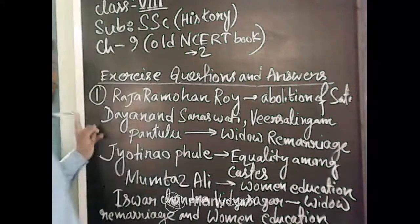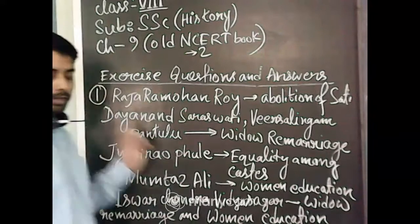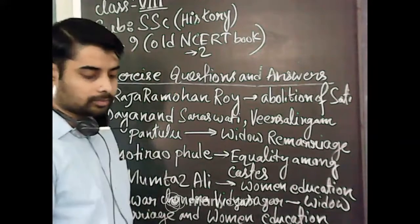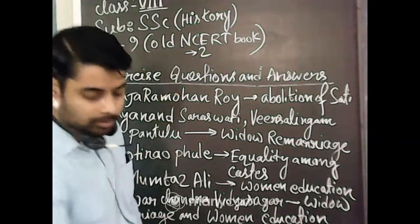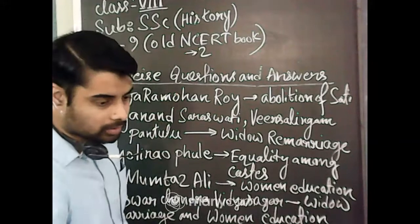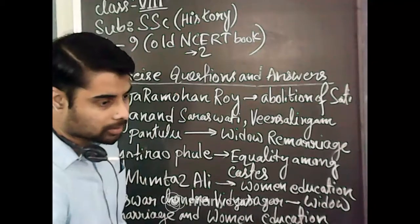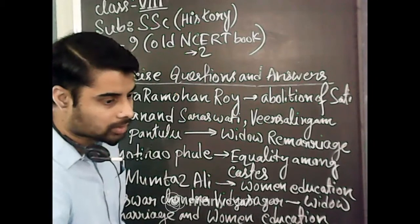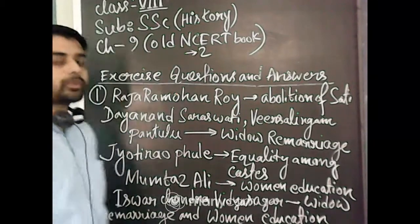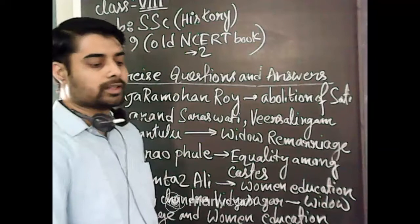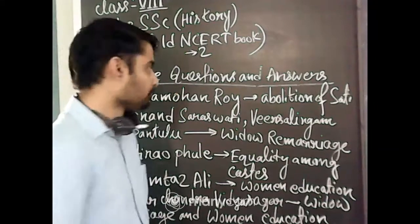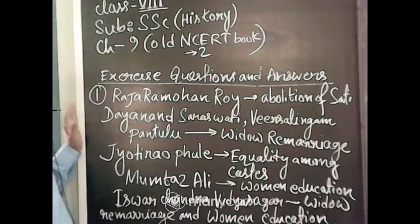The first question is given in the exercise. There are some names given, those are some eminent personalities and social reformers. You have to mention what social ideas did the following people support. I am giving the answer here.